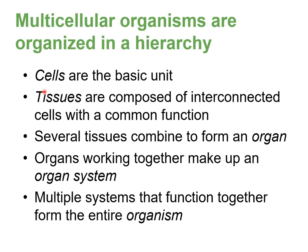Think about this in terms of your own body or an animal body — any eukaryotic organism, which remember is animals, plants, and fungi. Cells combine into tissues; several tissues combine to form an organ; organs working together make up an organ system; and then all of those systems working together make up an entire organism. So we have organs like our kidney, heart, and liver, which form systems like our digestive and respiratory systems.